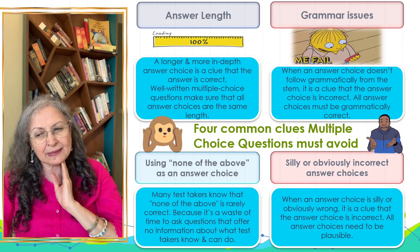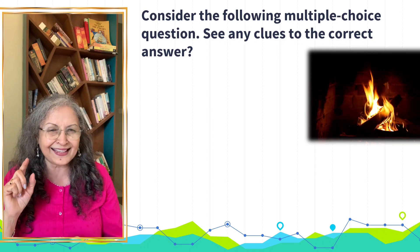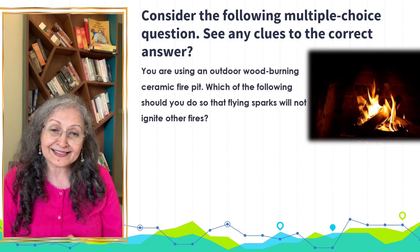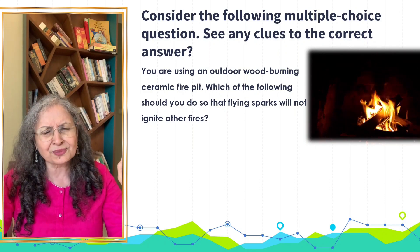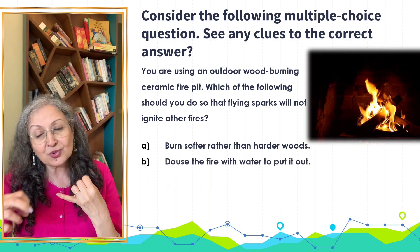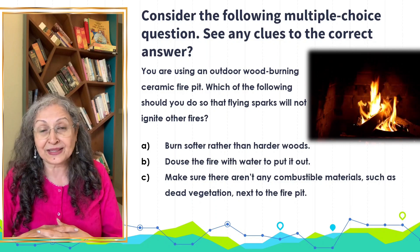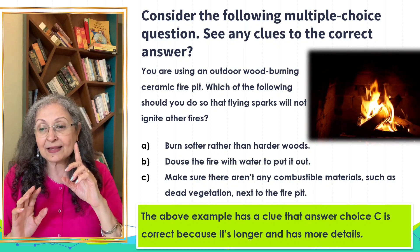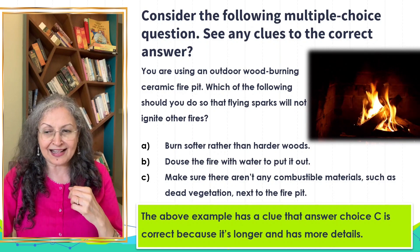Here is a leading example of what we should not do when framing MCQs. Consider this question: you're using an outdoor wood-burning pit — which of the following should you NOT do so that fire doesn't spread? Option one: should you burn softer rather than harder woods? Option two: should you douse the fire with water if it happens? Option three: should you make sure that there aren't any other combustible materials around? As you can see, option C is much longer with more detail, and students may tend to click on it simply because it seems more thorough.